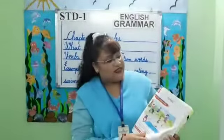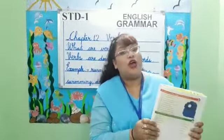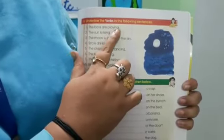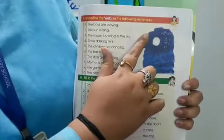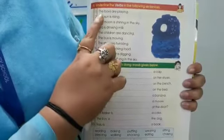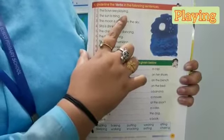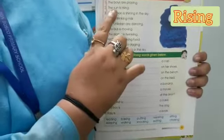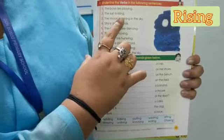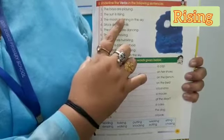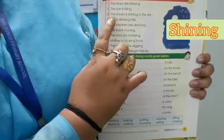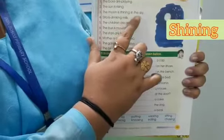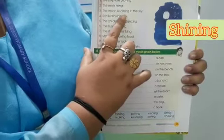There are a few exercises which you have to do in your book. Underline the verbs in the following sentences. The boys are playing — the verb is playing. The sun is rising — rising is the verb. The moon is shining in the sky — shining is the verb.